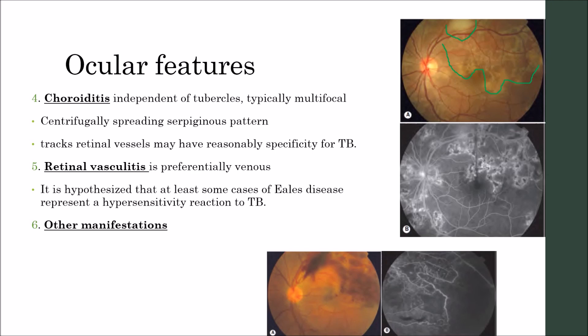Retinal vasculitis preferentially affects retinal venules. Retinal hemorrhages are common. Vascular occlusion with extensive ischemia and pre-retinal or disc neovascularization can occur. It is hypothesized that at least some cases of Eales disease represent a hypersensitivity reaction to TB.